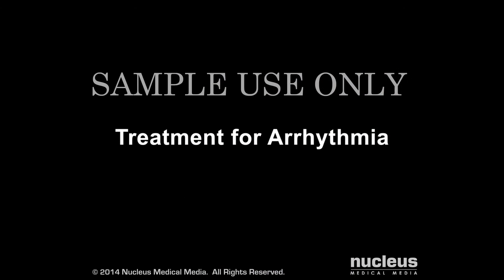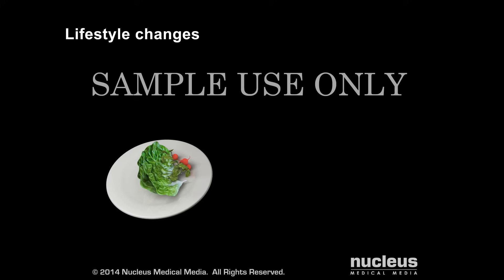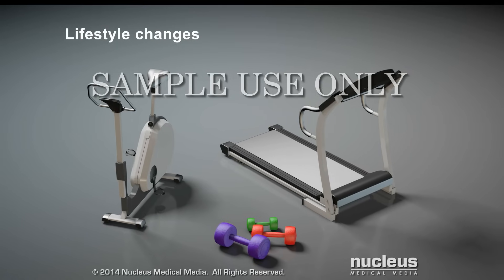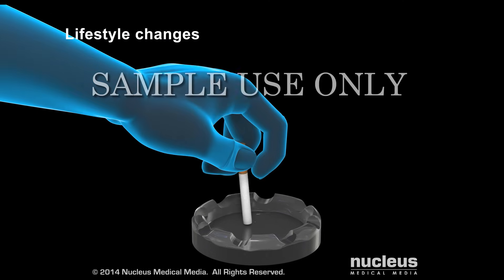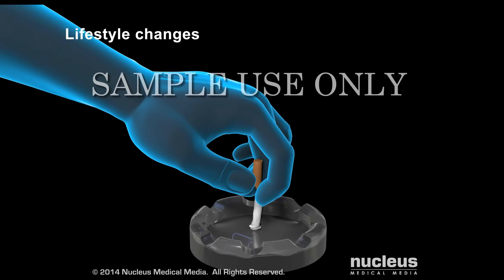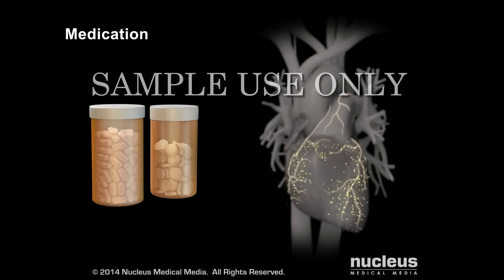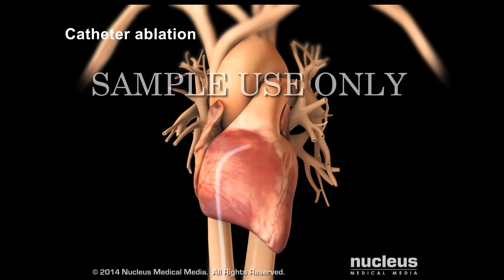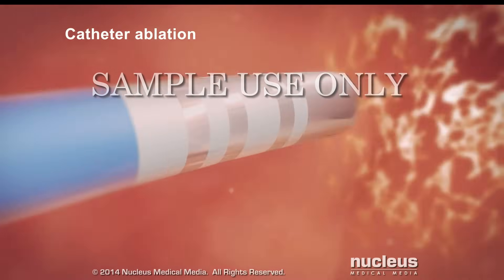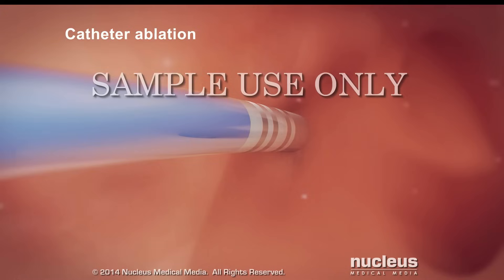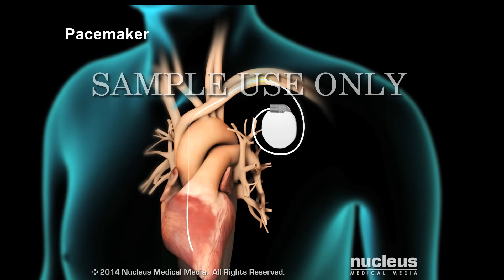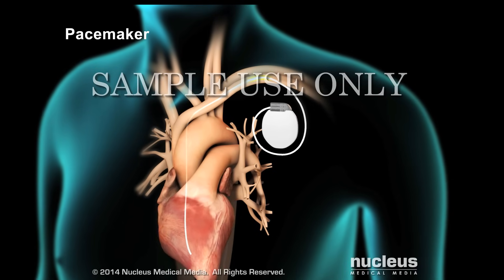Depending on the type of arrhythmia, a doctor may recommend one or more of the following treatments: lifestyle changes, such as eating a heart-healthy diet, exercising, and quitting smoking; medication, such as antiarrhythmic drugs and beta blockers; catheter ablation, where thin wires inserted into the heart destroy the tissue causing the arrhythmia with hot or cold energy; and implantable devices, such as a pacemaker or defibrillator, to correct the pace or rhythm of the heart.